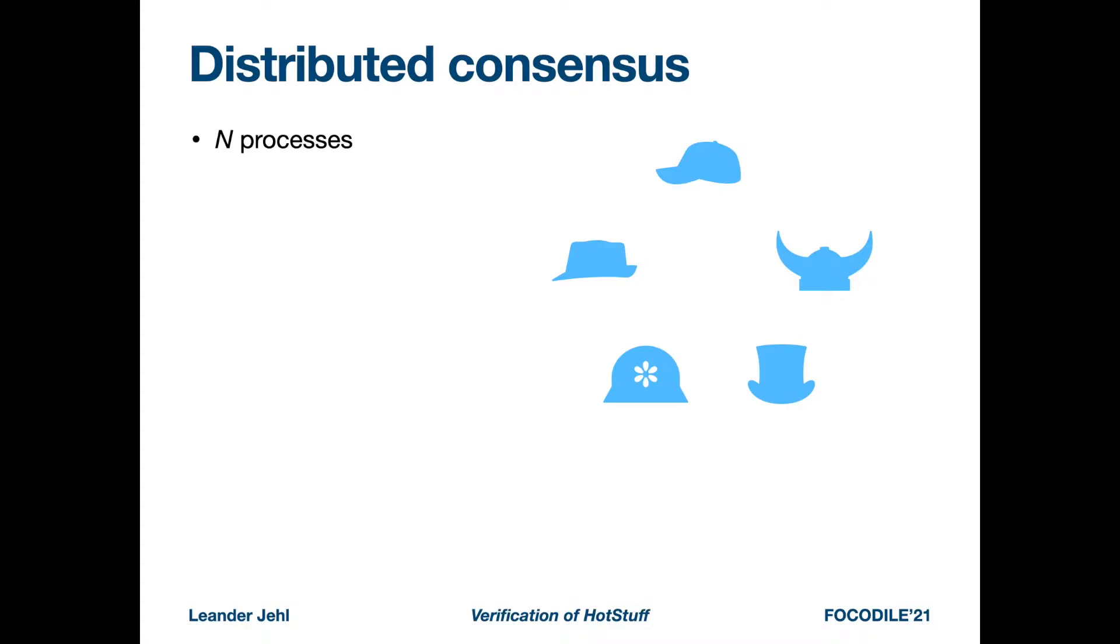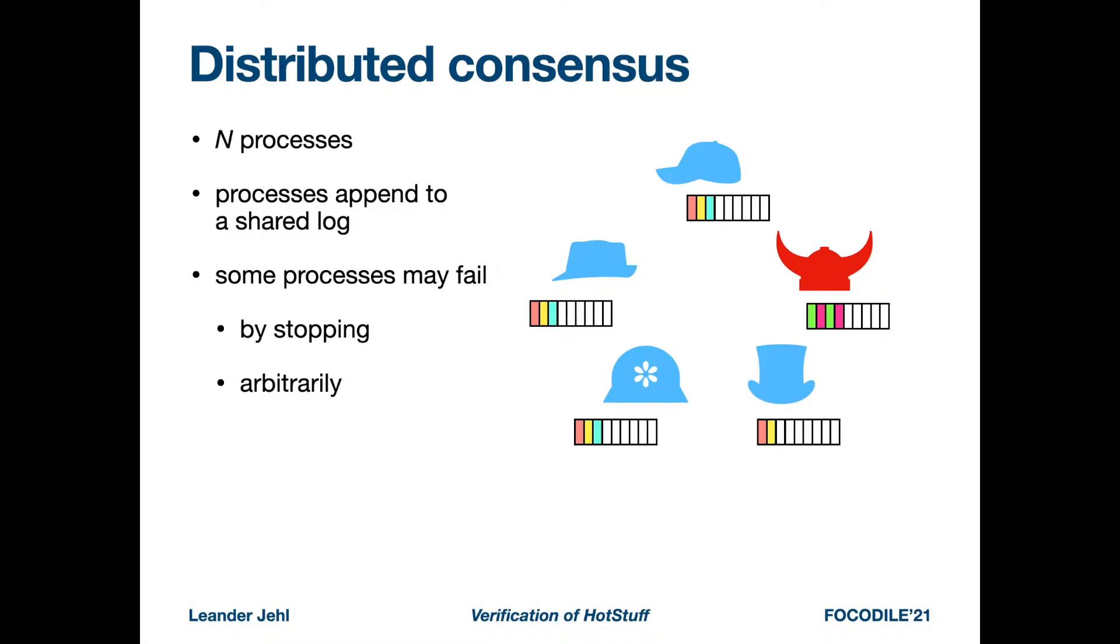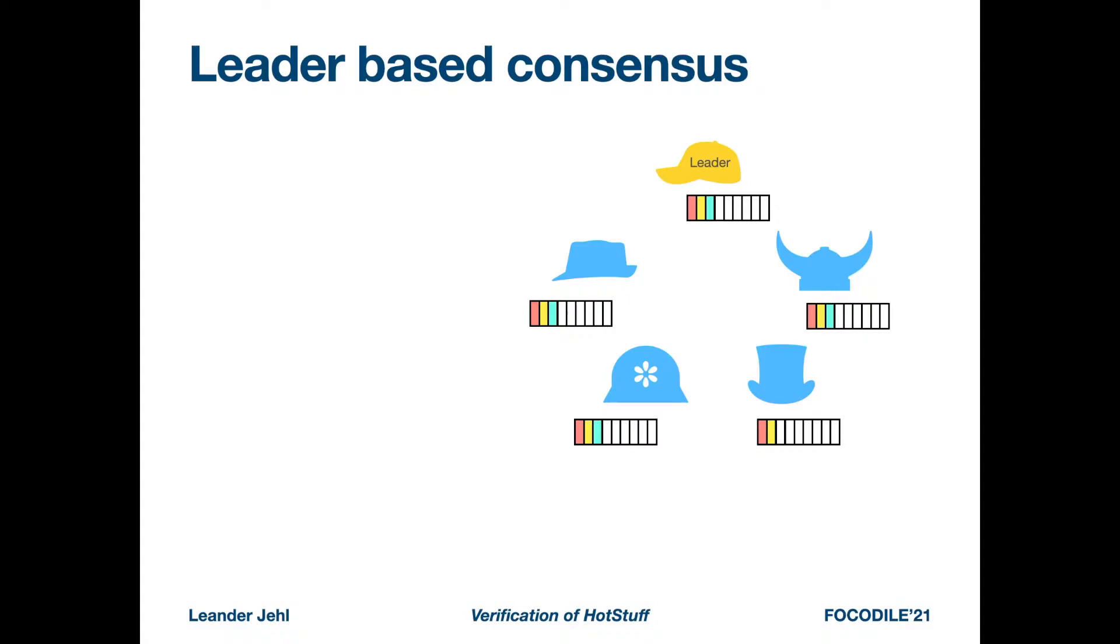In distributed consensus, there is a set of n processes, here shown as different hats. The processes maintain a shared log and some of the processes may fail. In leader-based consensus, one of the processes is assigned as leader.